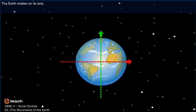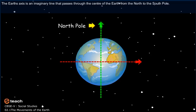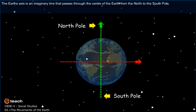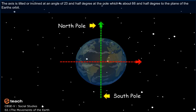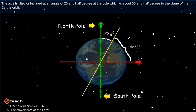The Earth rotates on its axis. The Earth's axis is an imaginary line that passes through the center of the Earth from the north to the south pole. The axis is tilted or inclined at an angle of 23.5 degrees at the pole, which is about 66.5 degrees to the plane of the Earth's orbit.